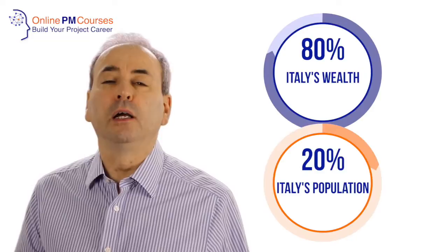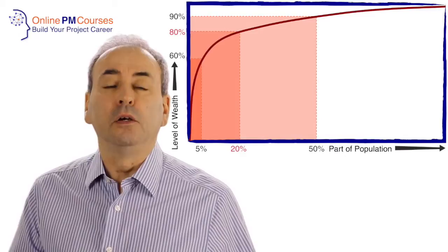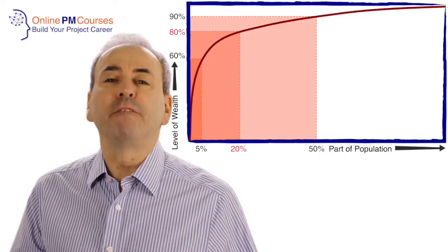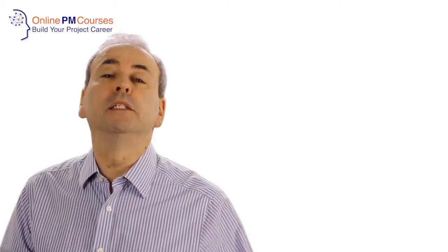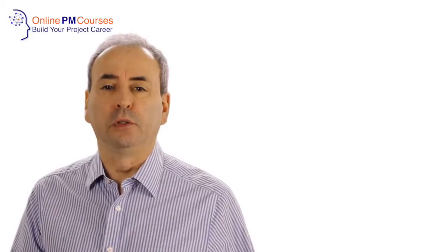If you look at the distribution of wealth around the world, you'll find not only the Pareto 80-20 principle, but that something like 5% of the world's population accounts for something like half of global wealth.